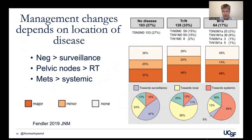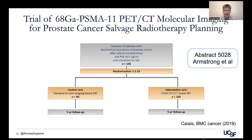If there is no evidence of disease, patients tend towards surveillance. If they have nodal disease, they tend towards local therapy like radiation therapy. If they have metastatic disease, they start systemic therapy. The role of PSMA PET is currently being evaluated in a trial by Jeremy Calais comparing PSMA PET to conventional imaging for radiation therapy planning, and hopefully we'll soon see whether PSMA PET improves outcomes compared to conventional imaging.